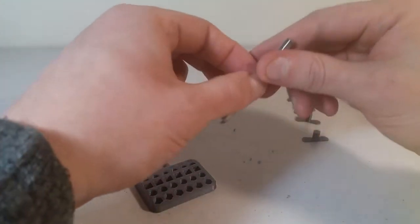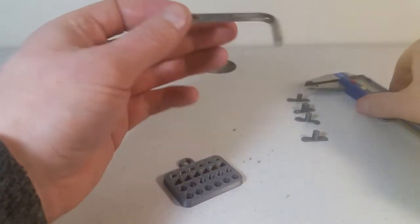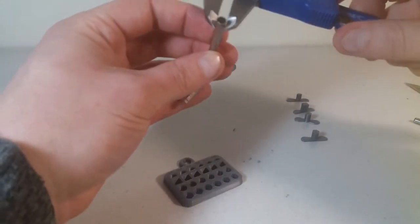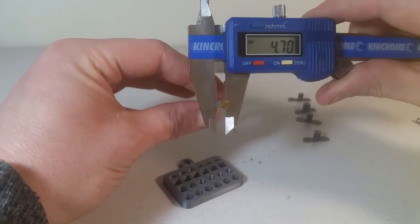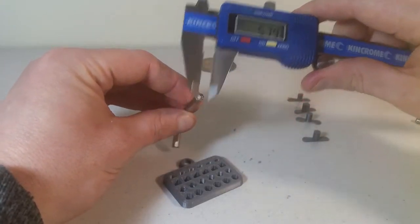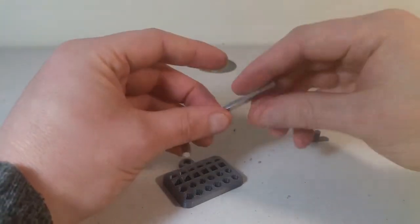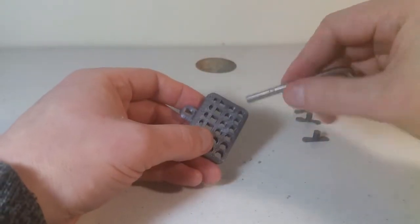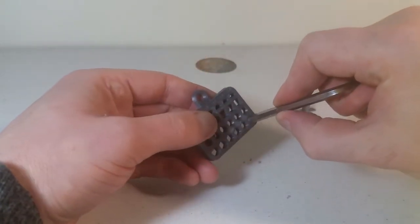And now we can try an Allen key, or a hex head, which is a six-pointed circle. This is 4.7 millimeters across. So we'll try to fit it into the smallest hex hole first. And as we might presume, it does not fit. Let's increase in size until we get one that does fit.